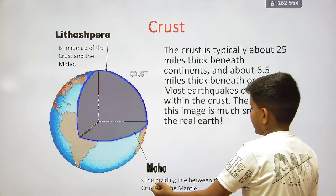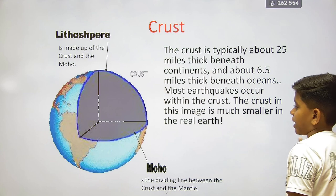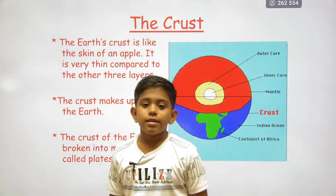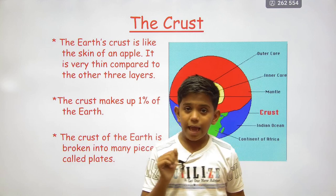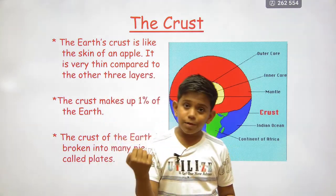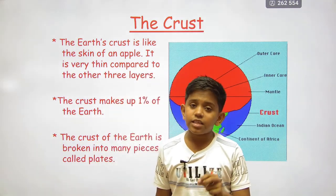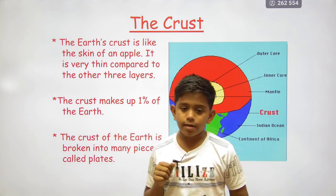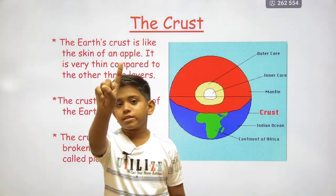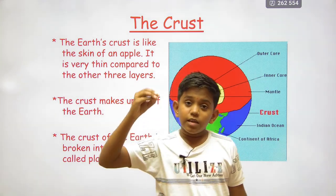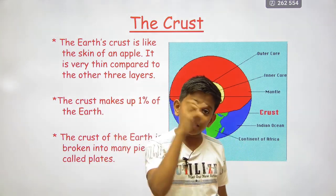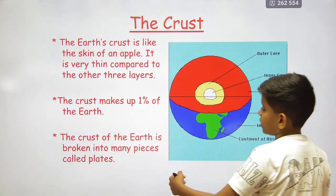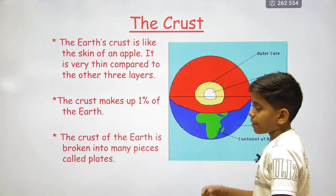The moho is the dividing line between the crust and the mantle. The earth's crust is like the skin of an apple — very thin compared to the other three layers. It is the thinnest layer, making up only one percent of the earth. The crust is broken into many pieces called plates.